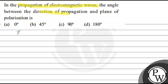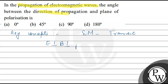So what is an electromagnetic wave? Let's discuss the key concepts. An electromagnetic wave is a transverse wave. In a transverse wave, the magnetic field vector is perpendicular to the plane of propagation, and the direction of propagation is perpendicular to the plane of propagation.